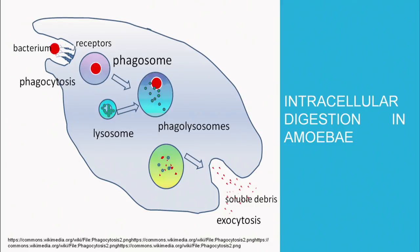As you can see in the amoeba, all five steps of digestion are taken care of by a single cell.